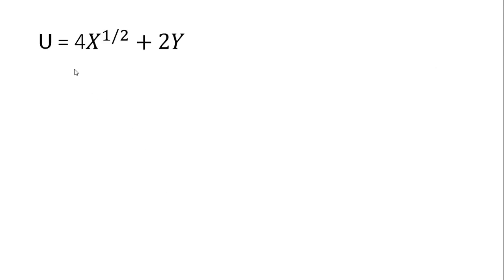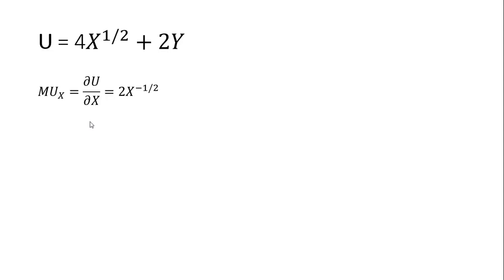Here's a specific functional form of a quasi-linear utility function: utility equals 4 times the square root of x plus 2 times y. We want to derive the demand for good x and the demand for good y. We'll start by getting the marginal utility of good x.